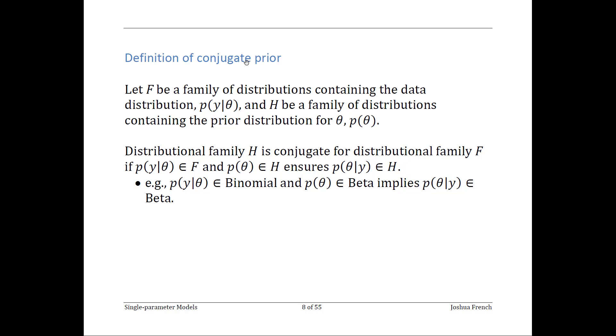Let F be a family of distributions containing the data distribution. For example, the normal mu sigma squared distribution is a family of distributions. The normal is a member of that family. Similarly, let H be a family of distributions containing the prior distributions for the parameter theta.